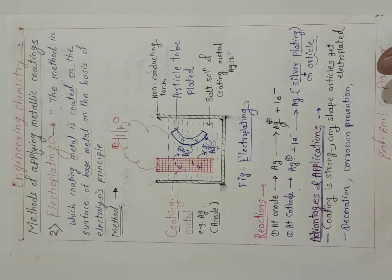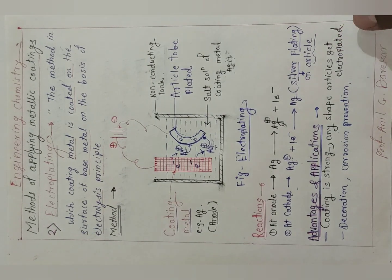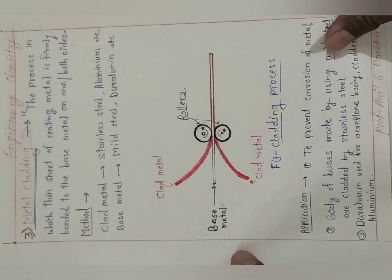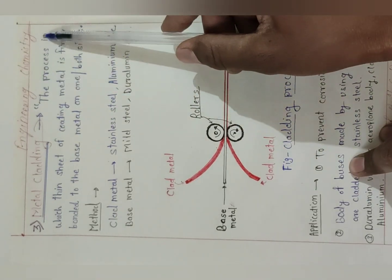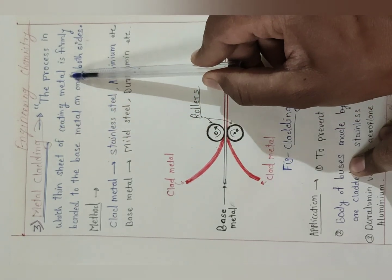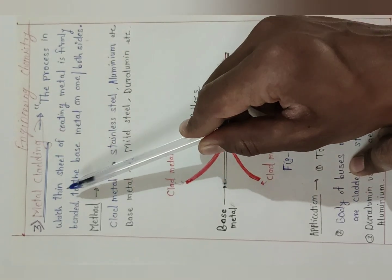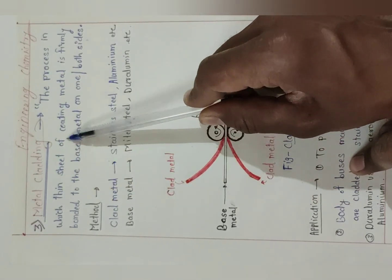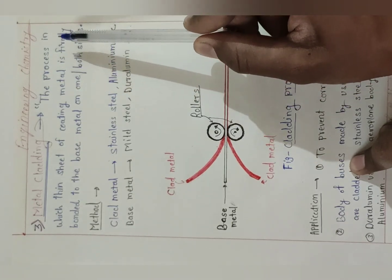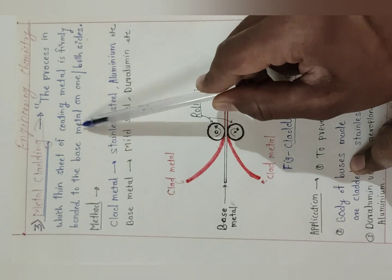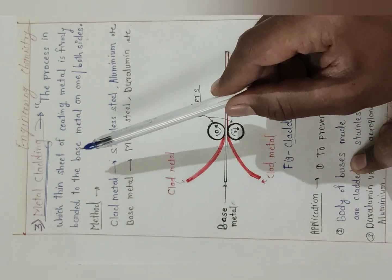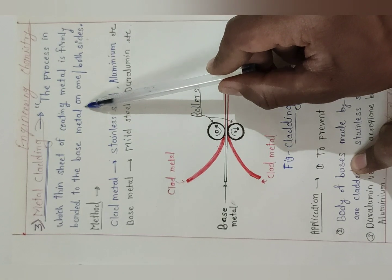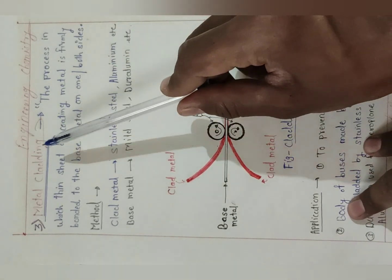Now we will see the third method used for applying metallic coating — metal cladding. What is meant by metal cladding? The process in which a thin sheet of coating metal is firmly — that is, strongly — bonded to the base metal on one or both sides is called metal cladding.